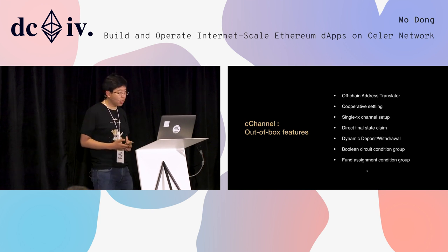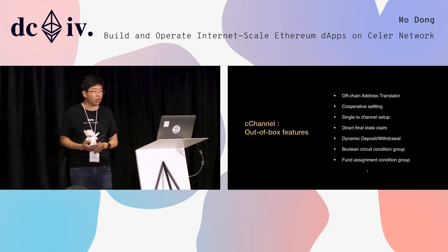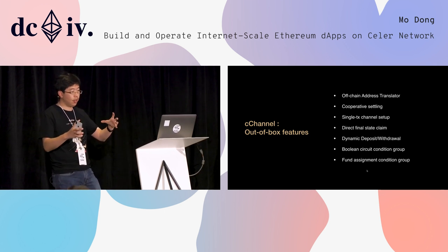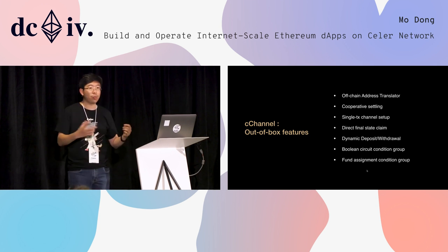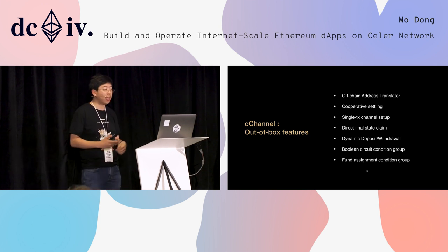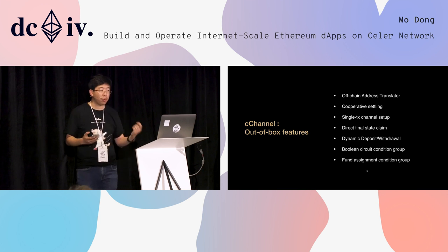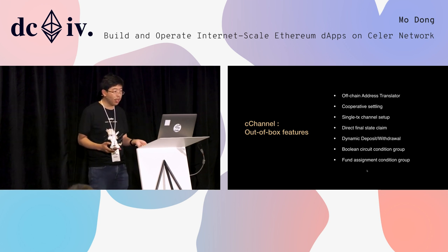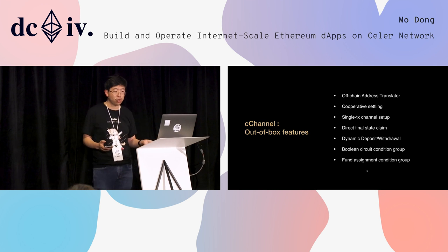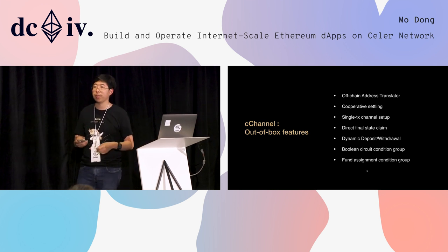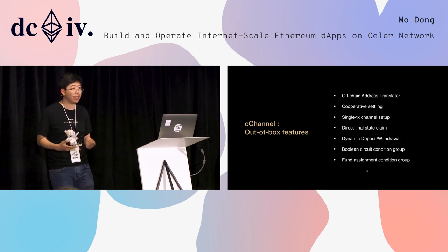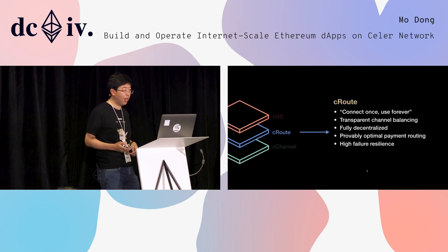In cChannel, we have a bunch of out-of-box features including an off-chain address translator to achieve pure off-chain objects, meaning that off-chain smart contracts don't need to exist on-chain unless there is a dispute. We have cooperative settling, single-channel setup where you can set up the entire channel with just one transaction, direct final state claim functionality, dynamic deposit and withdrawal. For conditions, we implement out-of-box condition groups called Boolean circuit condition and fund assignment condition groups, and they are all documented in our docs.